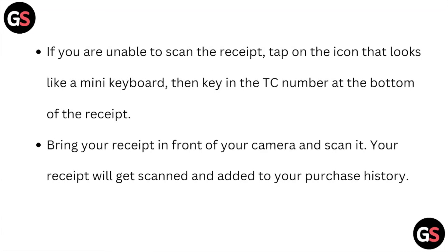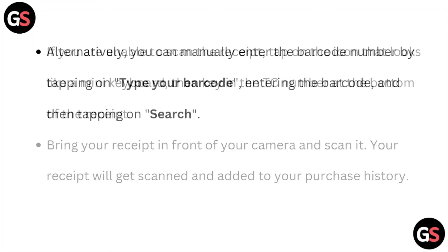If you are unable to scan the receipt, tap on the icon that looks like a mini keyboard, then key in the TC number at the bottom of the receipt. Bring your receipt in front of your camera and scan it. Your receipt will get scanned and added to your purchase history.